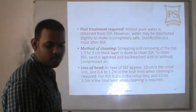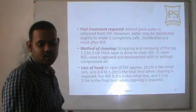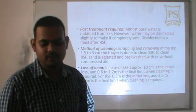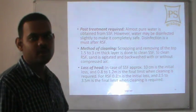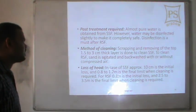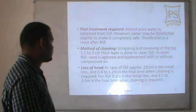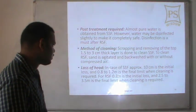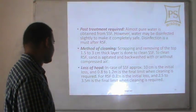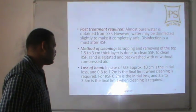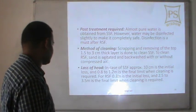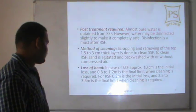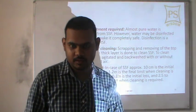Post treatment: almost pure water is obtained from slow sand filters; water may be disinfected slightly to make it completely safe. In RSF, disinfection is a must. Method of cleaning: in SSF, scraping and removing the top 1.5 to 3 cm thick layer is done. To clean RSF, sand is agitated and backwashed with or without compressed air. Loss of head in SSF: approximately 10 cm is the initial loss, and 0.8 to 1.2 meters is the final limit when cleaning is required.